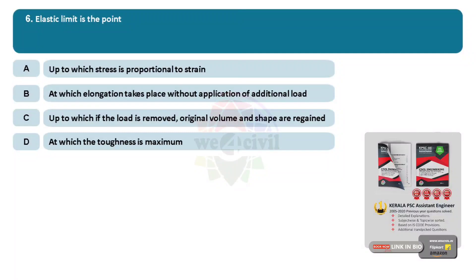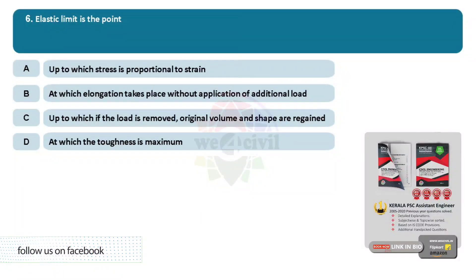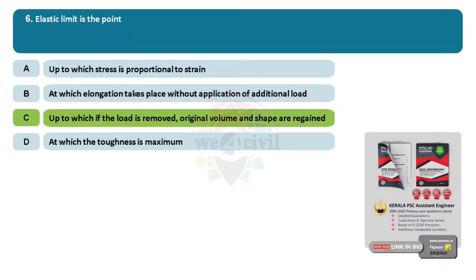Question number 6: Elastic limit is the point. Options are: Option A, up to which the stress is proportional to the strain. Option B, at which elongation takes place without application of additional load. Option C, up to which if the load is removed, original volume and shape are regained. Option D, at which the toughness is maximum. Answer is Option C, up to which if the load is removed, original volume and shape are regained.